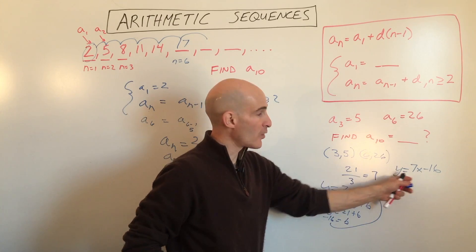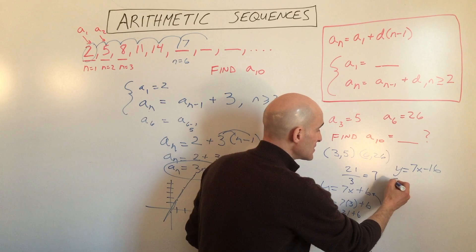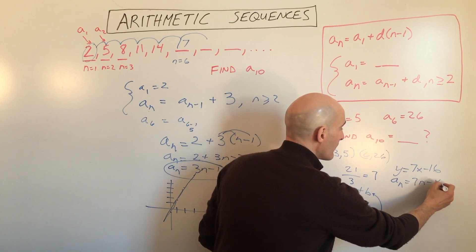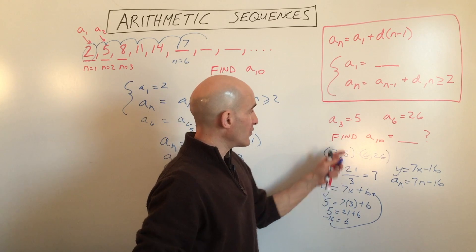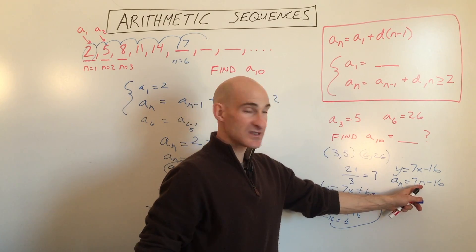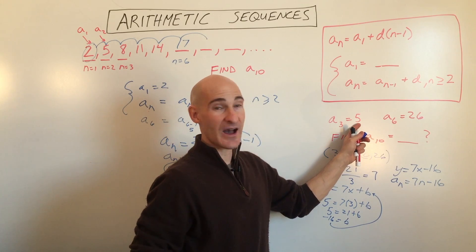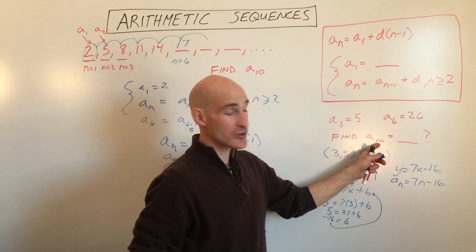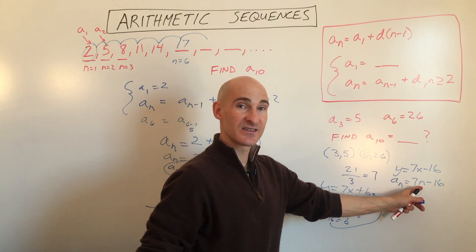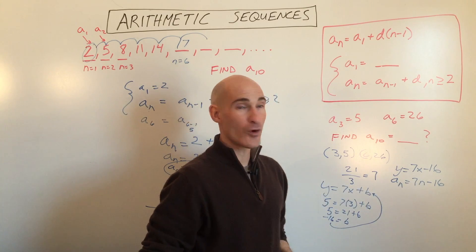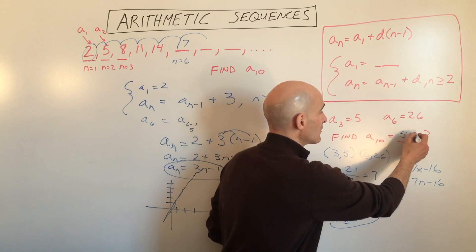Now, instead of writing it like the equation of a line, I'm going to write it using the sequence notation a sub n equals 7n minus 16. So you can see if we put 3 in, 7 times 3 is 21 minus 16 gives us back the value of that third term, which is 5. But if we want to find the 10th term now, we put in 10, that's 70 minus 16, which is 54. So this is going to be 54.